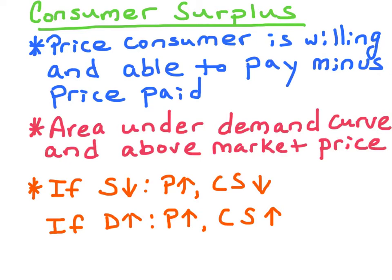Let's say the government imposes a per-unit tax on production, so the supply curve will shift to the left. The market price would increase and the new area of consumer surplus would decrease.